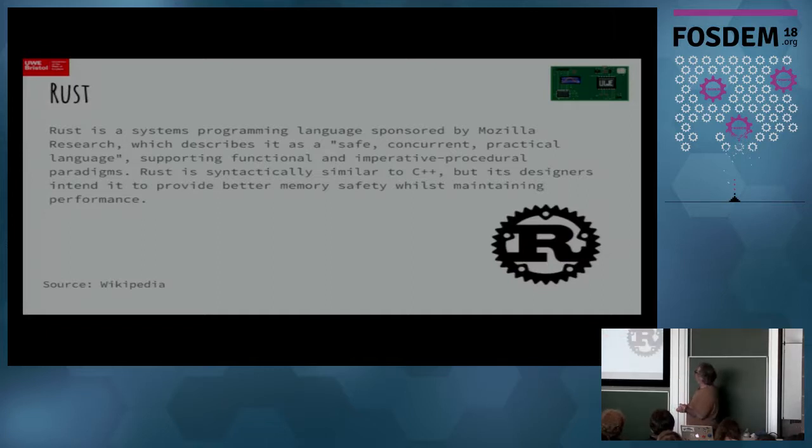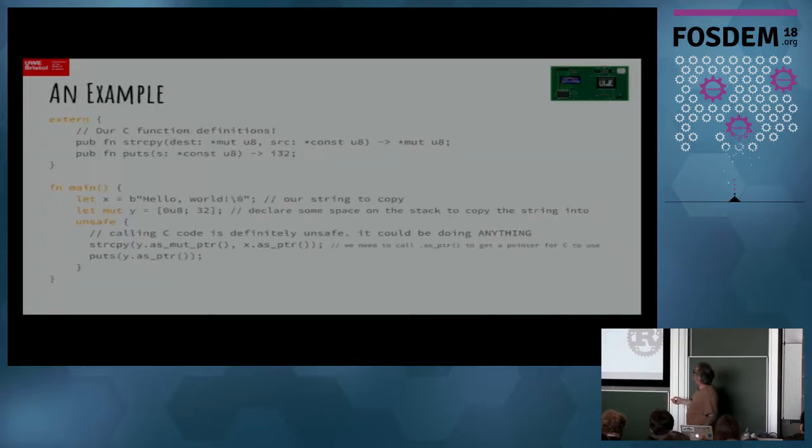So we're proposing Rust. This is just taken from the Wikipedia page, so you can read that in your own will. But the most important thing is that it describes itself as a safe and a practical language for system programming with a goal of being performance-compatible with C++. Now my experience is that it's not quite there yet, but it is pretty close. And it's really annoying.